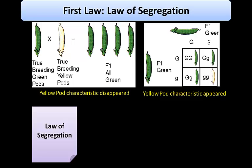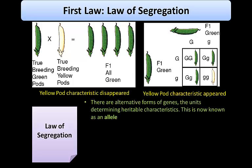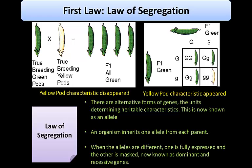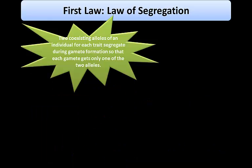From this, Mendel formulated the law of segregation: there are alternative forms of genes — the units determining heritable characteristics — known as alleles. An organism inherits one allele from each parent. The F1 generation inherited one green and one yellow pod allele from the parental generation. A sperm or egg carries only one allele for each characteristic, which pair upon fertilization. When alleles differ, one is fully expressed (dominant) and the other is masked (recessive). The two coexisting alleles segregate during gamete formation so that each gamete gets only one of the two alleles.